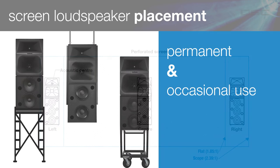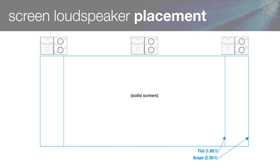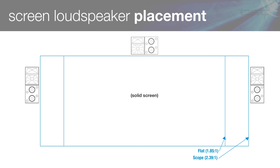In actual movie theaters, screen channel loudspeakers are placed permanently on some type of scaffold or platform behind the screen. If the application is a multi-purpose room, the screen loudspeakers can be rolled into position on a mobile cart or lowered from a fly loft above the stage. In large theaters with a tall fly loft, the screen itself can be flown in with the loudspeakers for temporary use. Where a perforated screen is not practical, screen loudspeakers can be positioned over the screen, or with the center loudspeaker over the screen and left and right to the sides. In either solid screen situation, it is critical to keep the loudspeakers as close to the screen perimeter as possible and in the same plane as much as possible.